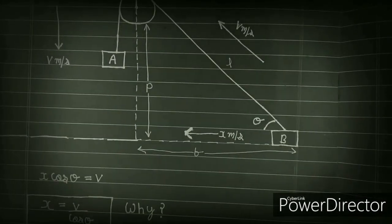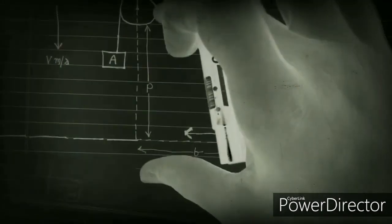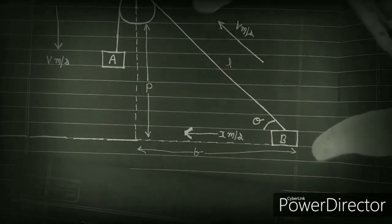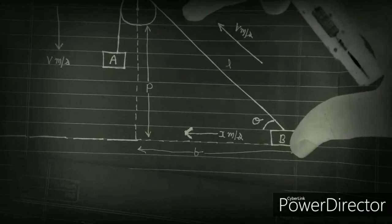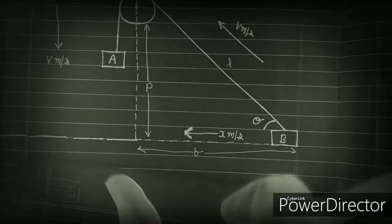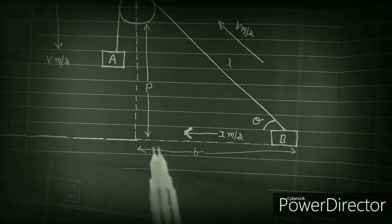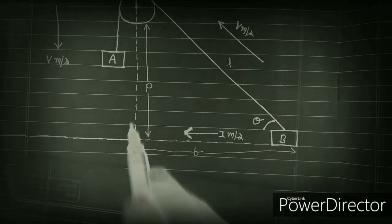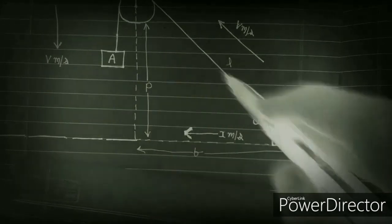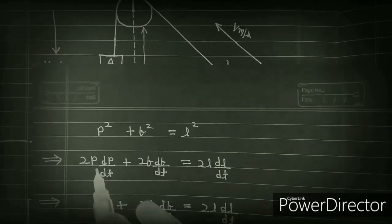Let me give the proof. I call this side p, and this length is l, which is the hypotenuse, and this horizontal distance is b. We have a right-angle triangle here, because this is the height, this is the base, and this is the hypotenuse.